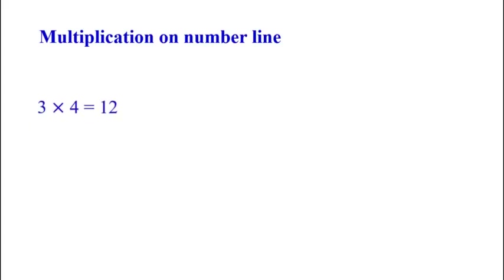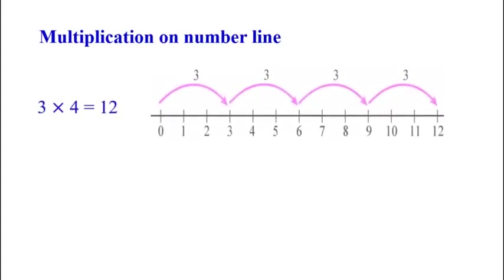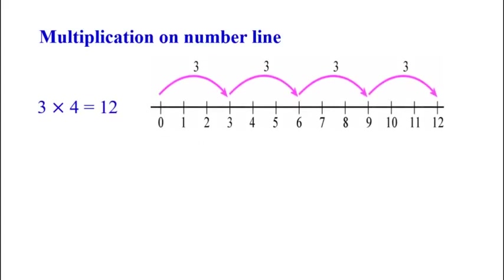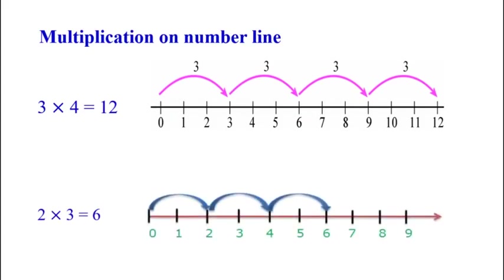Multiplication on the number line: 3 into 4 is equal to 12. Here we make 4 jumps of 3 units each towards the right — that is 3 plus 3 plus 3 plus 3, with 4 jumps of 3 units each. Another example: 2 into 3 is equal to 6. Here 3 jumps and in each jump 2 units, so the answer is 6.